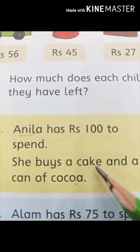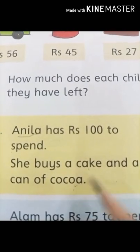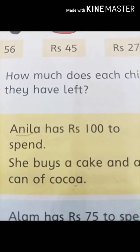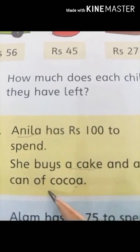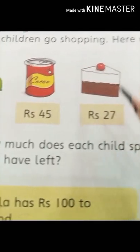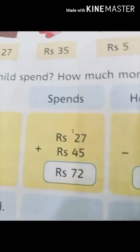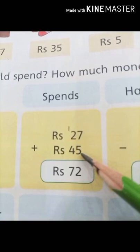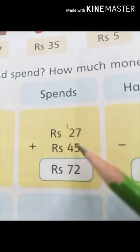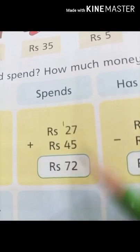First of all, we are going to add the money for the cake and the cocoa, because in the shopping mall we take the things, count their money, and then go to the counter to pay the cash. The cake is 27 rupees and the cocoa is 45 rupees. Adding them: 7 plus 5 is 12, write 2, carry 1; then 2 plus 4 plus 1 is 7. So Anila is spending 72 rupees on the cake and the can of cocoa.